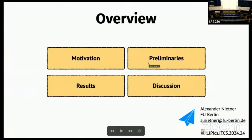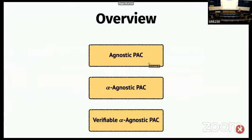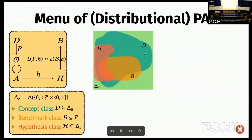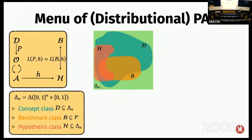That was the motivation. Let's go through some preliminaries first so that you know what the words are I'm talking about later. To start, let's introduce agnostic PAC learning — a quick overview. If you are not familiar with PAC learning, PAC stands for Probably Approximately Correct, and that's exactly what it means. Probably means the task is a random algorithm — there's a probability of success, and approximate means we don't want to solve the task exactly but only in an approximate sense.